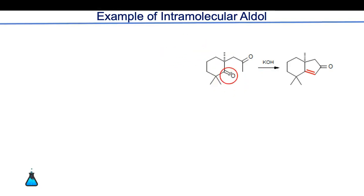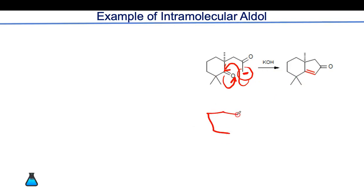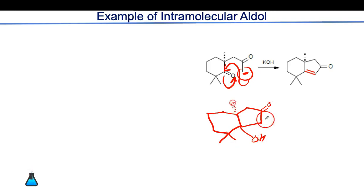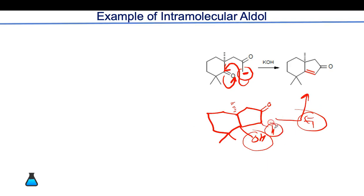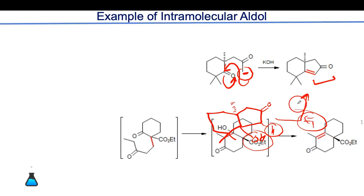In one example of intramolecular aldol condensation with OH⁻: OH⁻ removes the hydrogen from the alpha position. The resulting carbanion attacks the other carbonyl carbon, and both electrons are taken by that oxygen, forming an alkoxide. Upon heating, E1 elimination of OH and H occurs as water, forming a double bond — this is intramolecular aldol condensation.